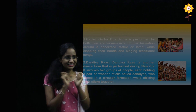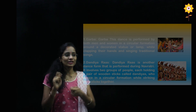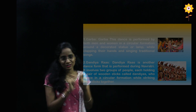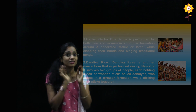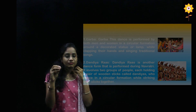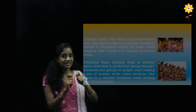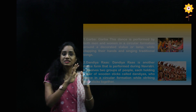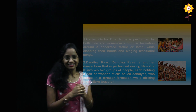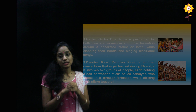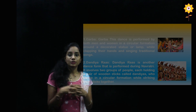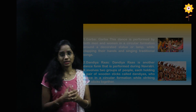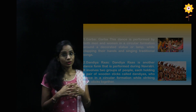Dandiya Raas is another dance form performed during Navratri — it involves two groups of people, each holding a pair of wooden sticks called Dandiyas, dancing in circular formation while striking their sticks together. It's not just about striking sticks — it involves a musical rhythm, and when dancing in pairs, there is a beautiful human connection and bond, showing how a dance form helps build connection among people.